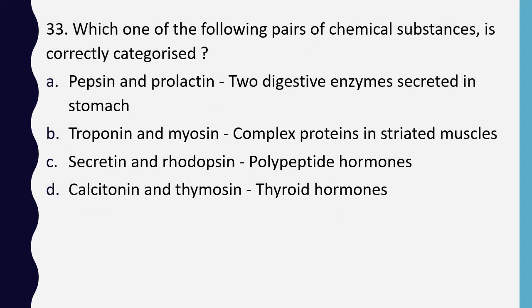Question 33. Which one of the following pairs of chemical substances is correctly categorized? Pepsin and prolactin — two digestive enzymes secreted in stomach; troponin and myosin — complex proteins in striated muscles; secretin and rhodopsin — polypeptide hormones; calcitonin and thymosin — thyroid hormones. Correct answer is option B: both troponin and myosin are complex proteins in striated muscles.